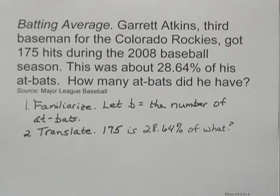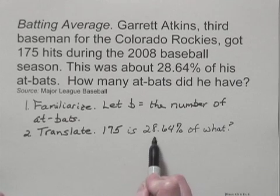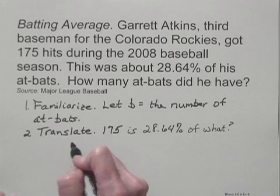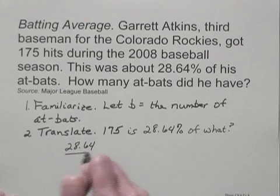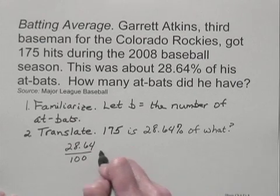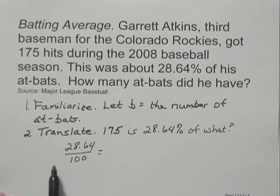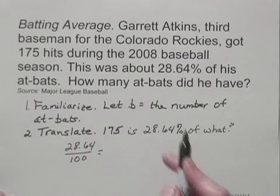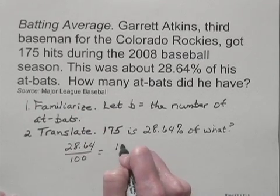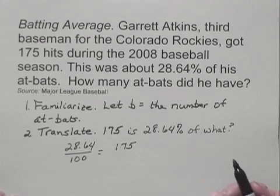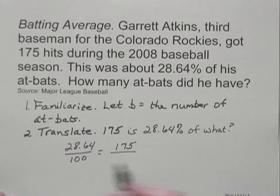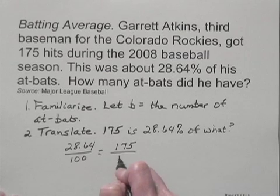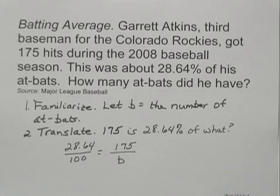When we translate this to a proportion, we can write 28.64% as one ratio — the ratio of 28.64 to 100. This percent represents the number of hits, and the actual number of hits is 175. So we put 175 in the numerator of the second ratio. The denominator is the total number of at-bats, represented by B. So we have this proportion to solve.